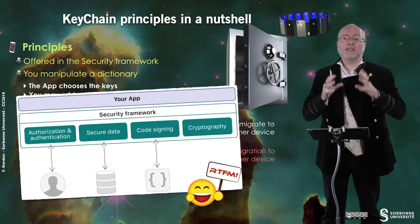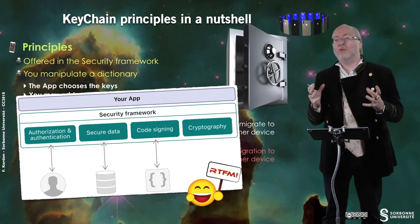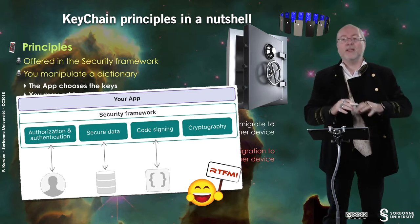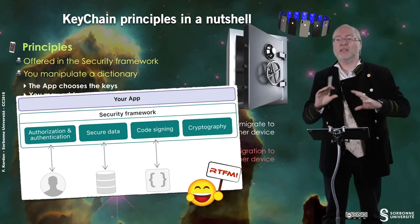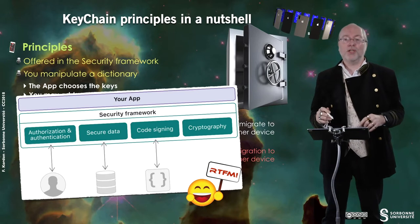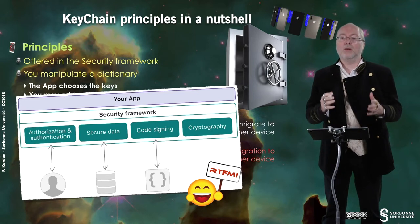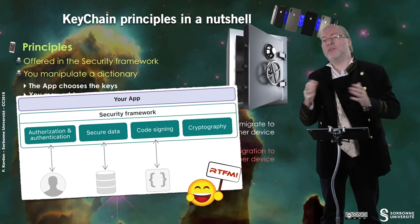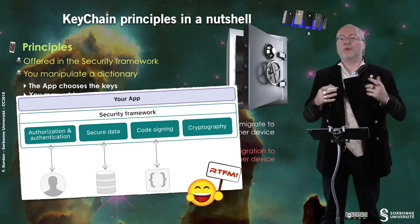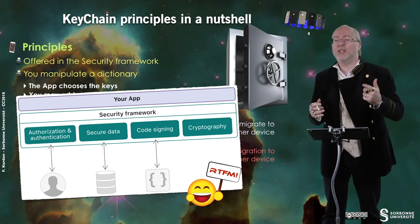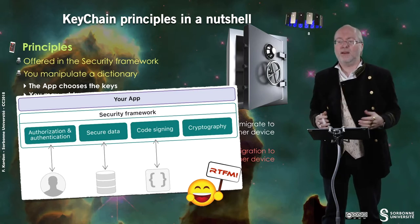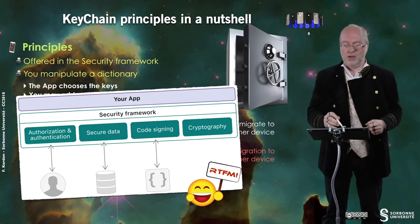Basically, this is the architecture of the Security framework. There are four classes of services: authorization and authentication — which also handles Touch ID, Face ID, etc. at a lower level — secure data, of which Keychain is a part, code signing, and cryptography.